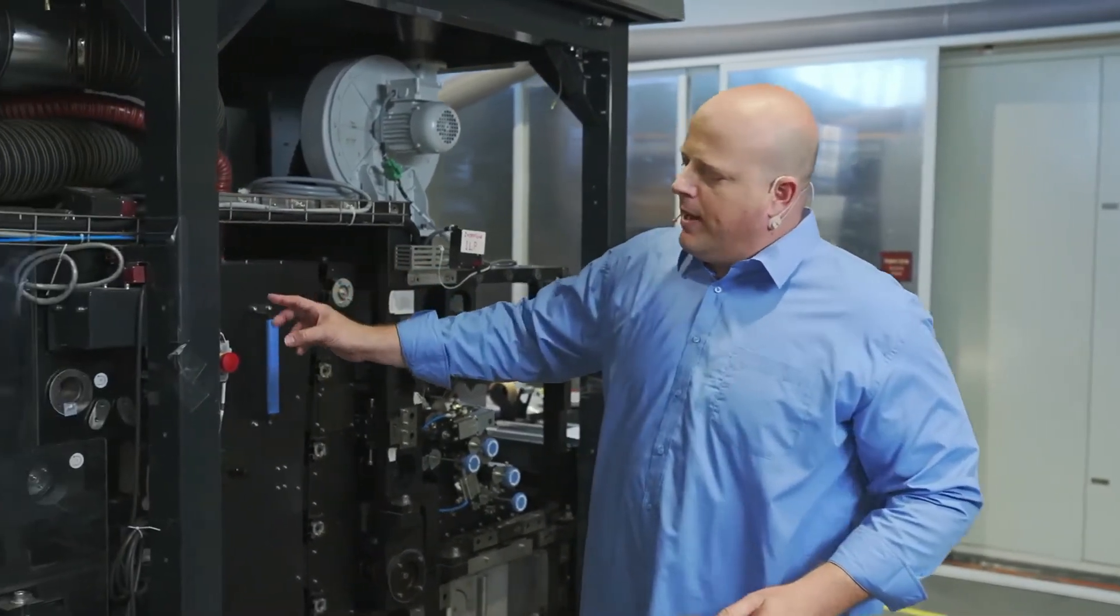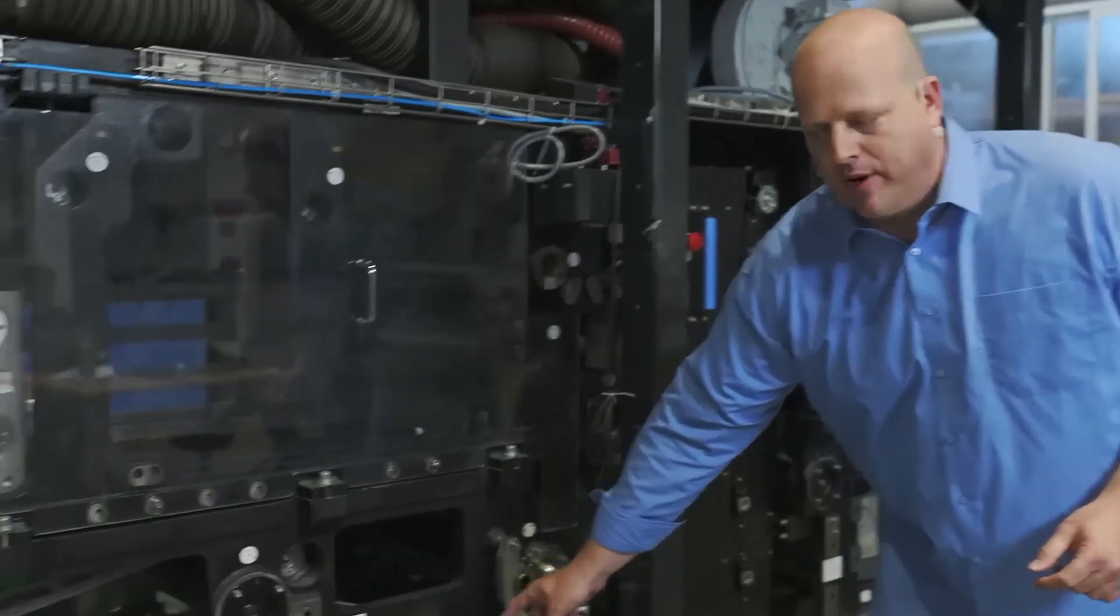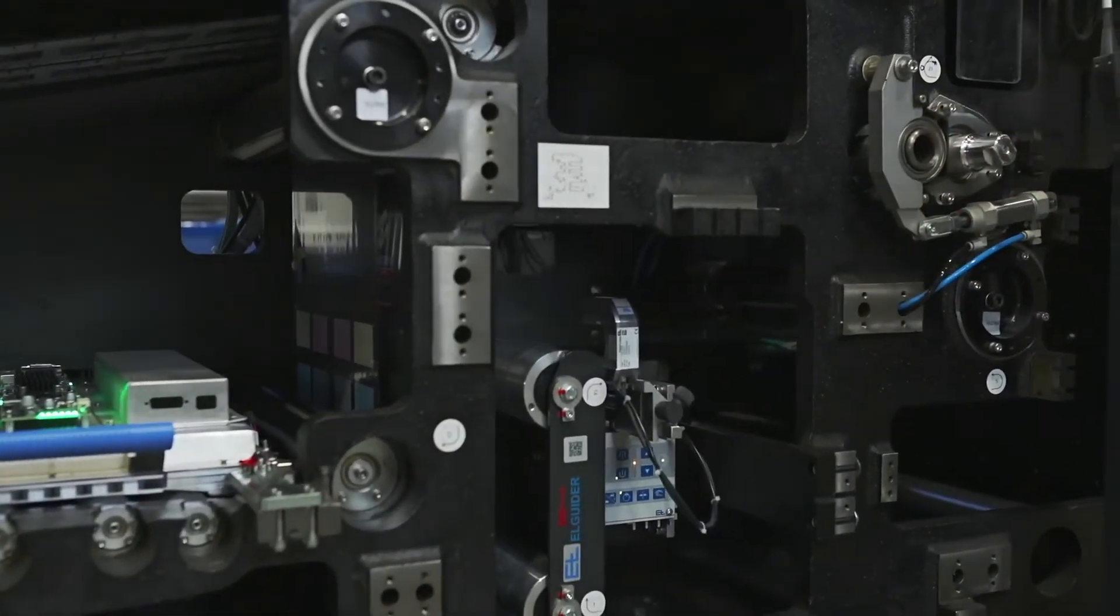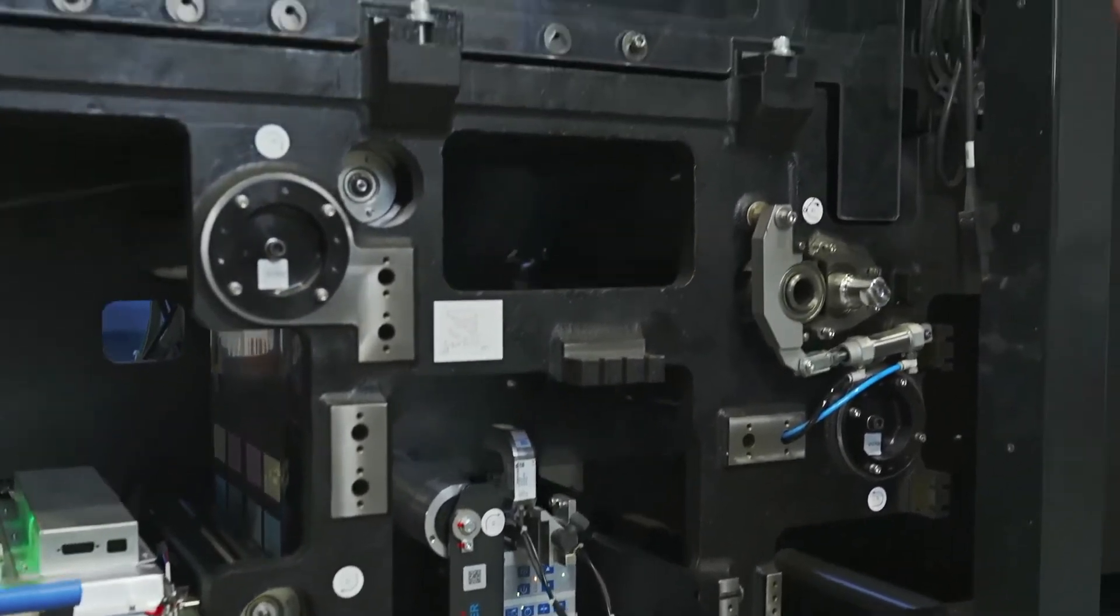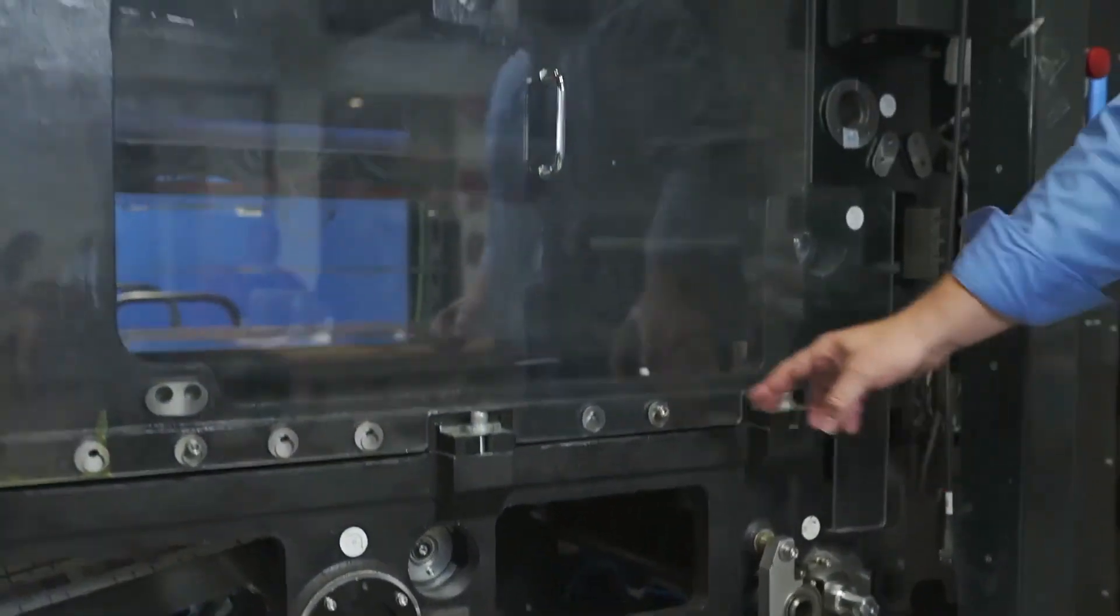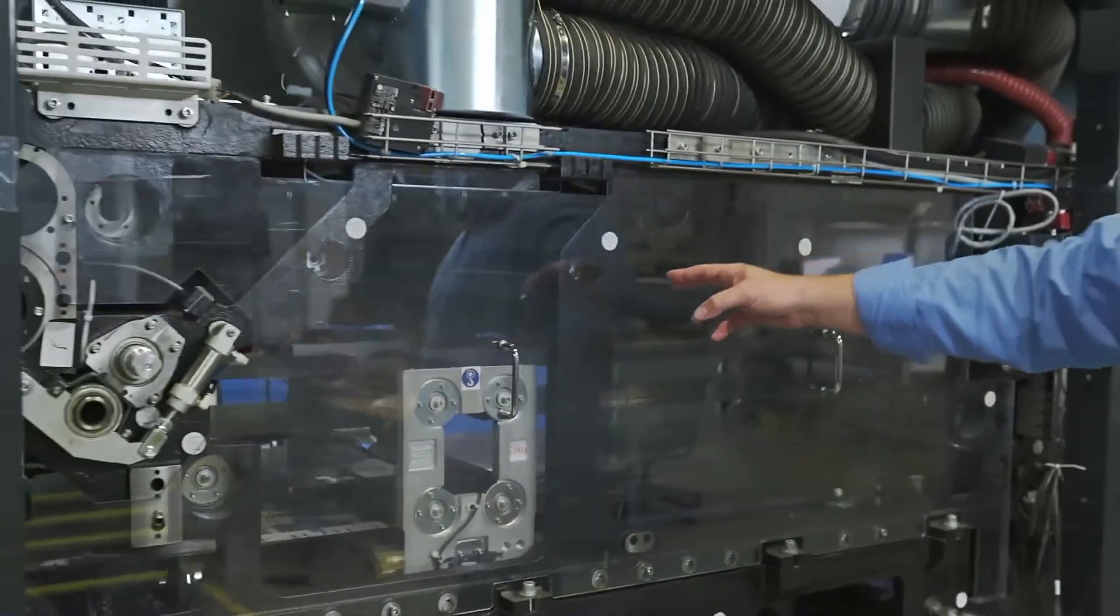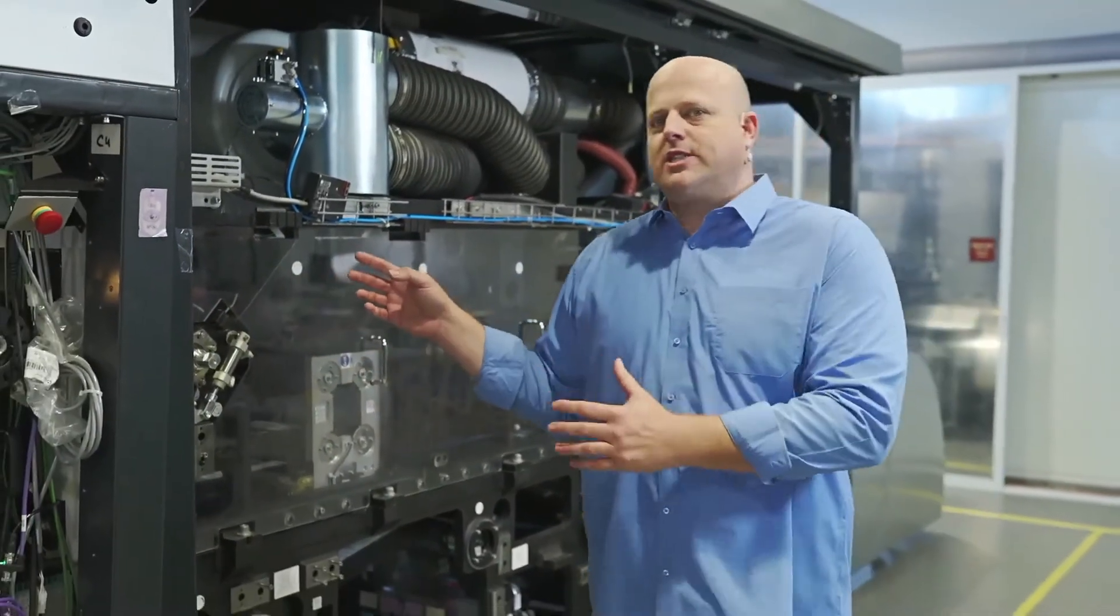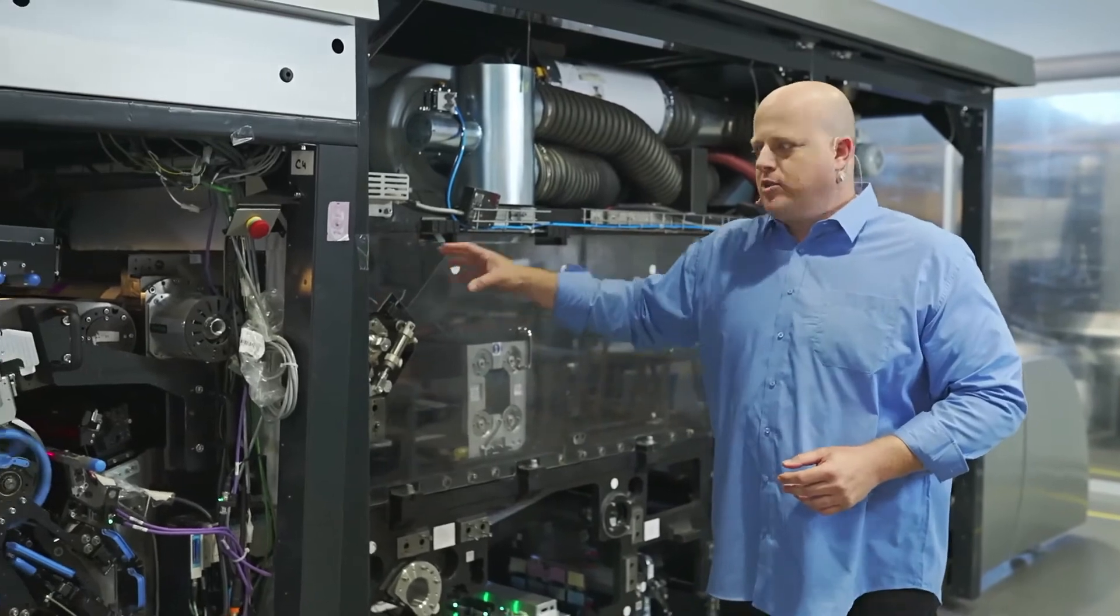From here, the web is moving to a web guide sensor. The purpose of the web guide sensor is to make sure that the web is accurately positioned to the printing engine, going to the buffer station, all the way to the impression drum, in which the image is transferred from the blanket to the web.